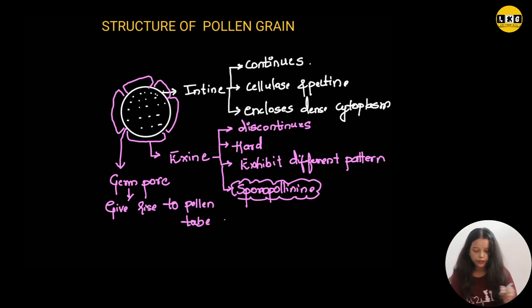Next, inside the cytoplasm, after the pollen maturity, there will be presence of two cells. One is the larger cell, which is known as vegetative cell or it is also known as tube cell. It is larger and what is the function of vegetative cell? It provides nutrient. It is rich in nutrient.